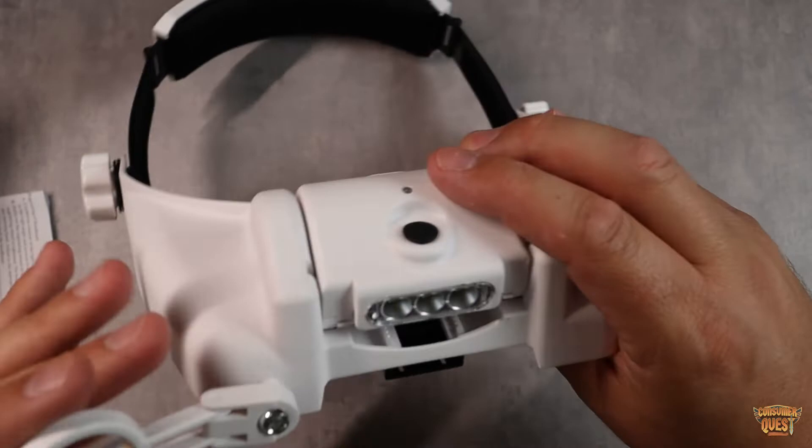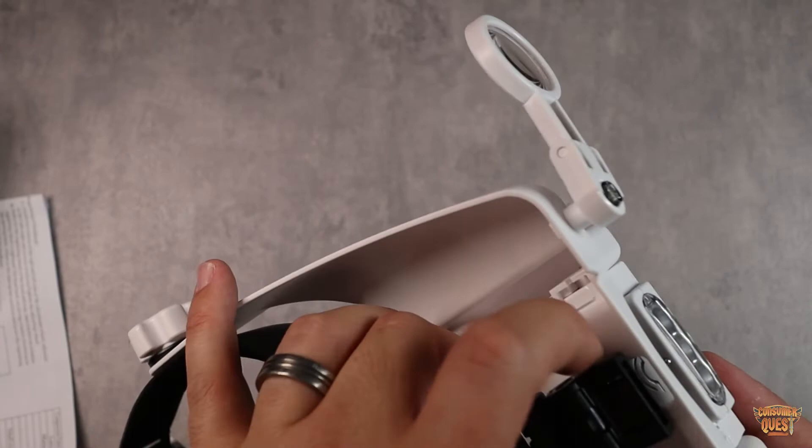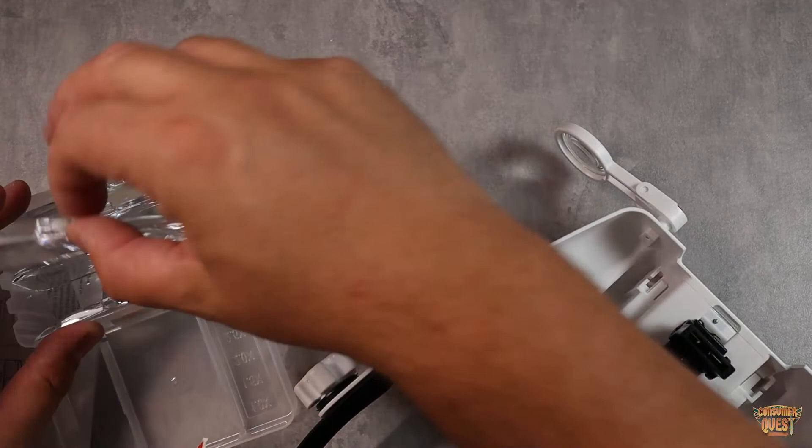This is that 8x swing-down adjustable magnification here, and then you've got your magnification arms where you're going to be able to put your different magnification lenses. You're going to pop these right in here in multiple different configurations, and that's going to give you that magnification option.